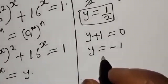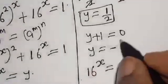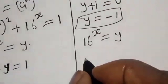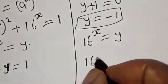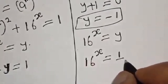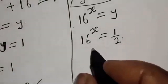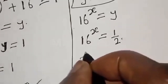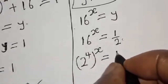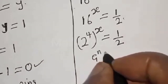Recall that 16 raised to power s equals y. For the first case, 16 raised to power s equals 1 over 2. Now 16 is the same as 2 raised to power 4, so 2 raised to power 4s equals 2 raised to power minus 1.